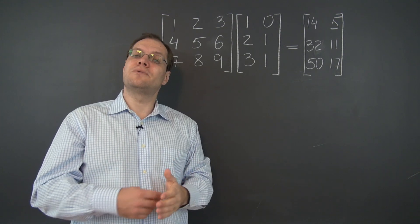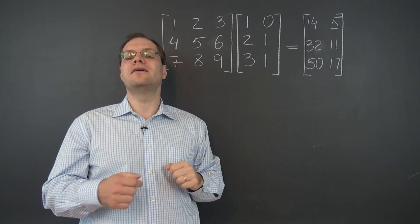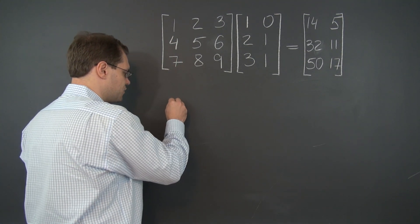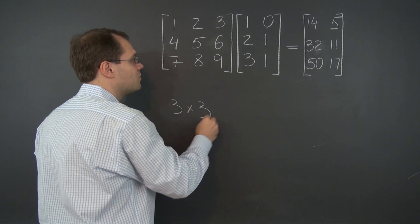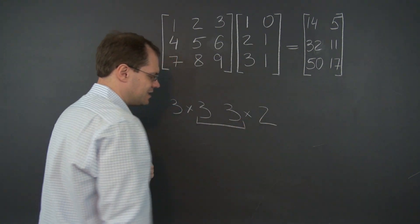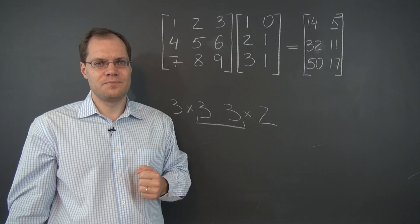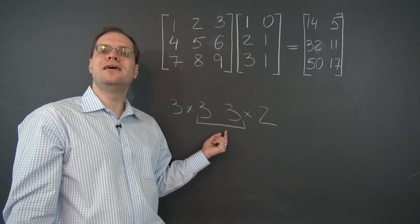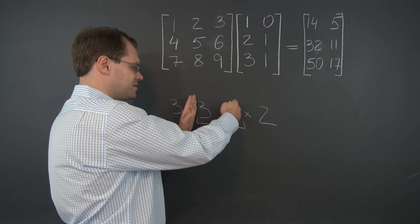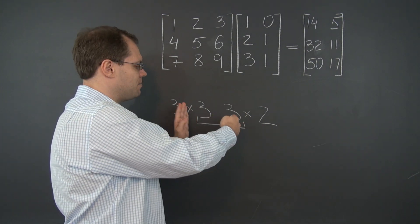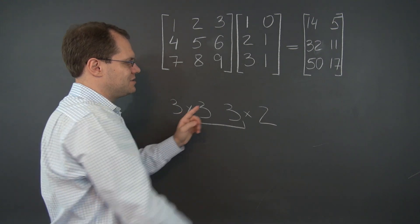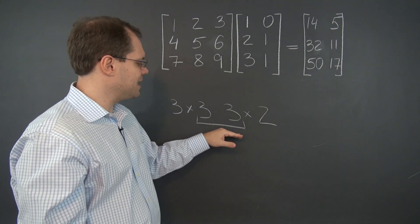A third way of putting it that requires no change of words is by talking about the inner dimensions — the inner dimensions need to match. We can say this first matrix is 3 by 3 while the second is 3 by 2, and the inner dimensions match, which means the two matrices are compatible. Not only does it signal compatibility, it also gives us the dimension of the answer: in this case 3 by 2. The middle dimensions seem to drop out, and we're only left with the outer dimensions, 3 by 2.